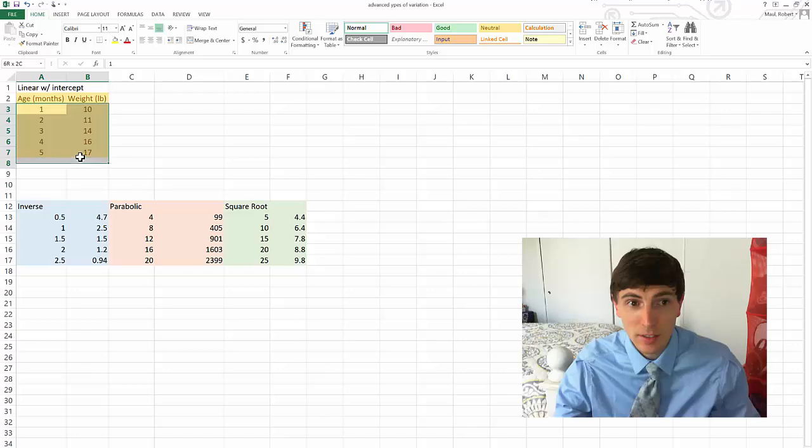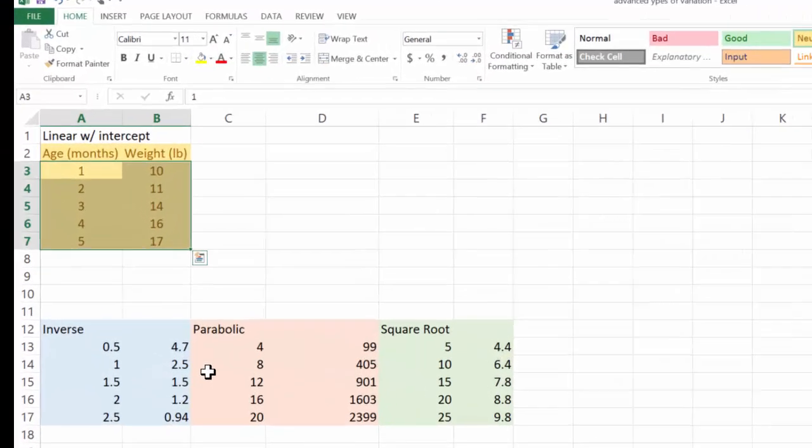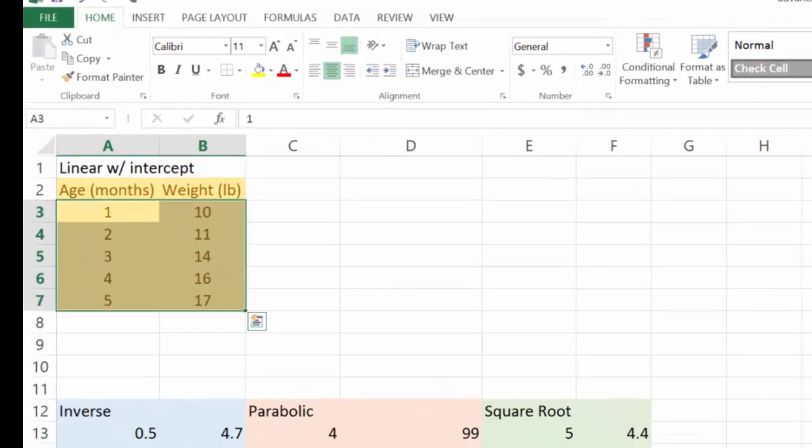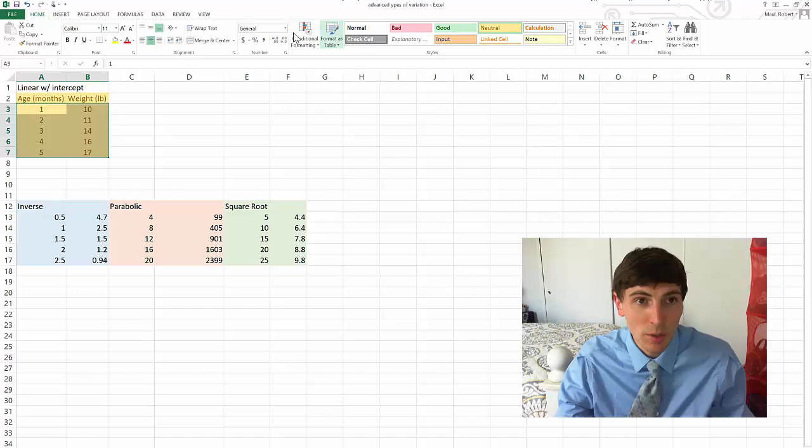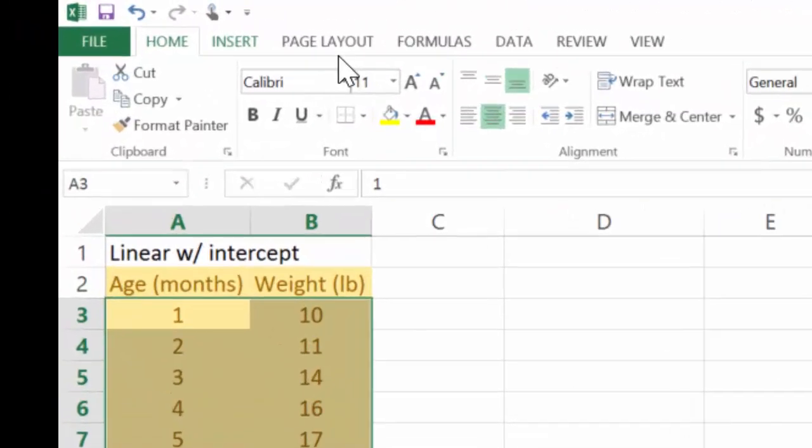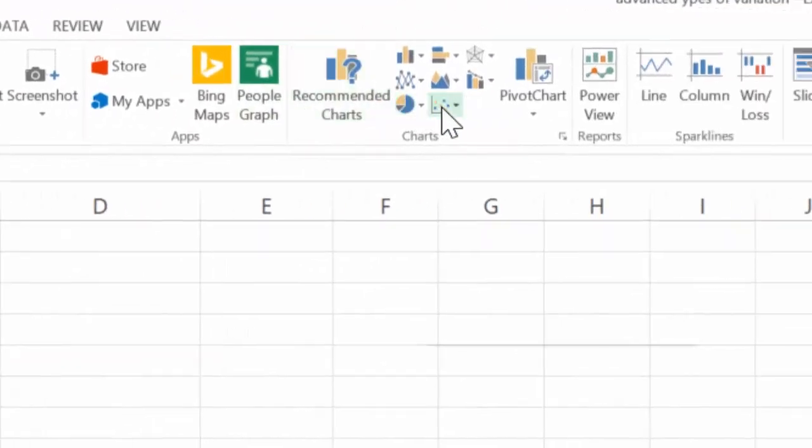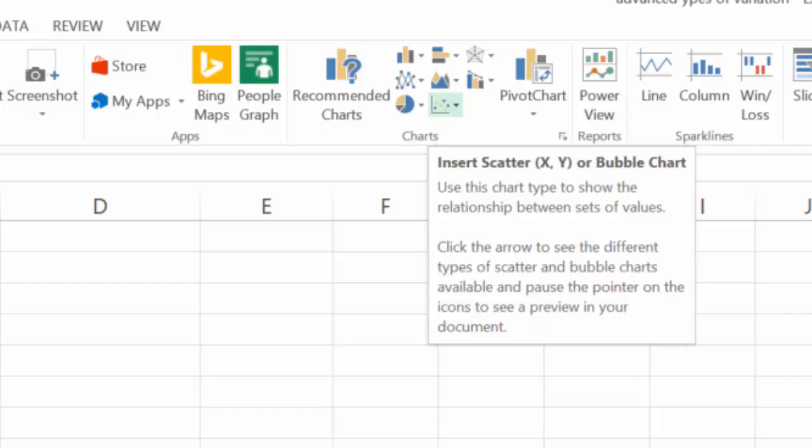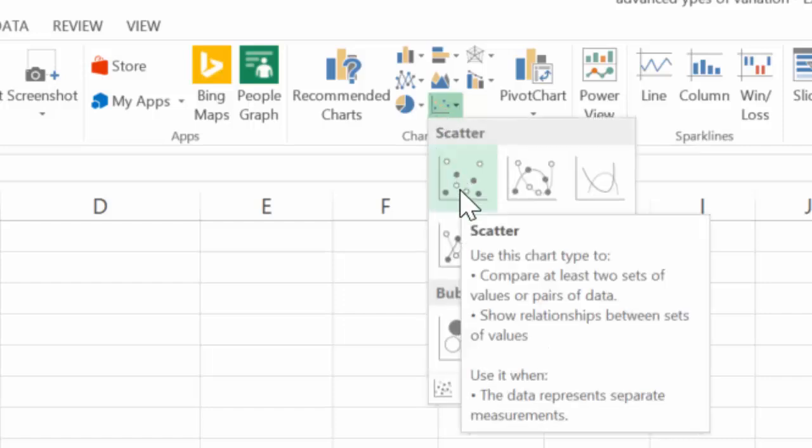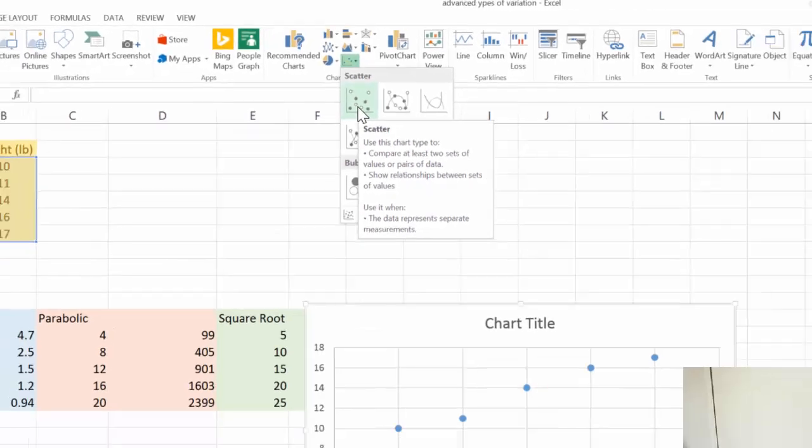First off, I have on to Excel. I've made two columns. I'm making sure to make my independent variable be the first column. I have the age of a baby in months and its weight. So, I'm going to go ahead and click on Insert. We're going to go ahead and go over to Charts, and we're going to insert a scatter chart. And I'm going to click on one without any lines or connected lines.